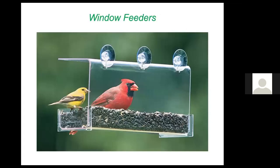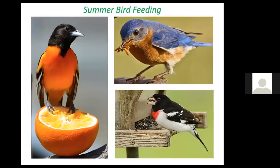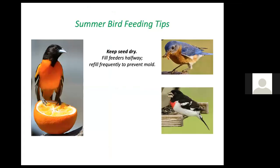Perhaps a window feeder is the best design: we get to see birds up close, we can monitor it daily and clean it as necessary, and it's usually not accessible to squirrels or predators. It's perfectly fine to feed birds in the summer. Baltimore Orioles love oranges and grape jelly. Bluebirds will accept mealworms, dead or alive. The rose-breasted grosbeak and other birds are happy to consume seeds offered in feeders. If offering seeds in summertime, keep feeders only half full and refill frequently to prevent mold from moisture accumulation at the bottom.